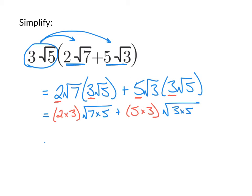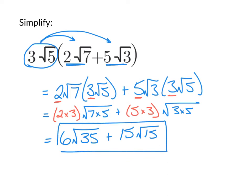Now we finish it off: 2 times 3 is 6, and 7 times 5 is 35, giving us 6√35. In the next term, 5 times 3 is 15, and under the square root, 3 times 5 is 15, giving us 15√15. So this is our simplified expression.